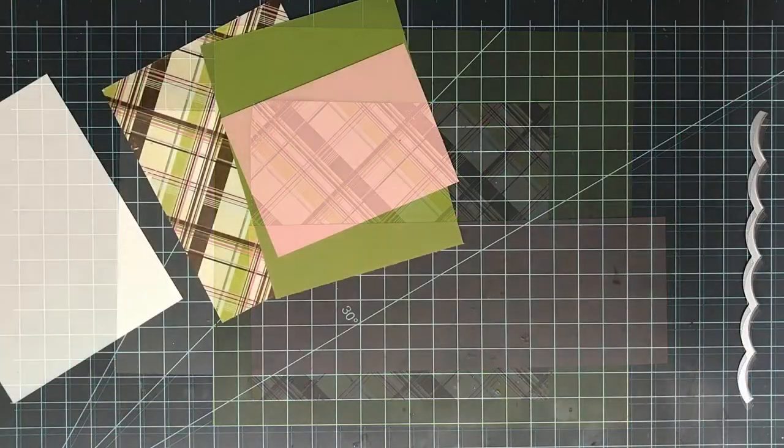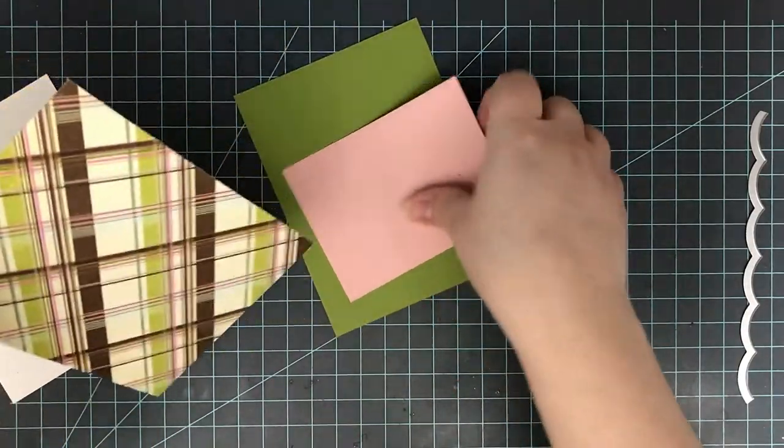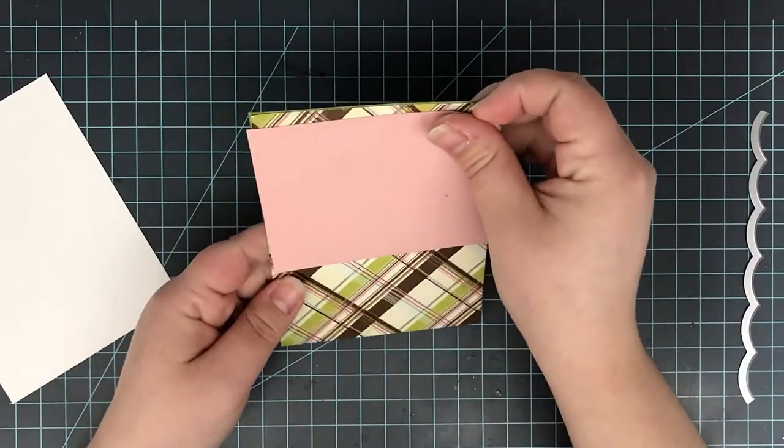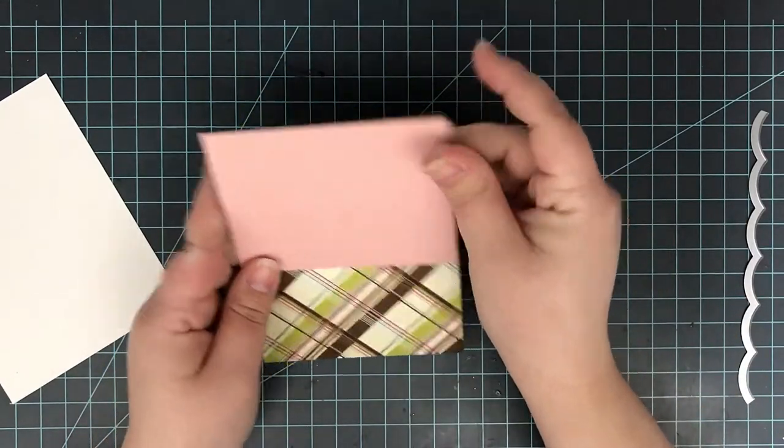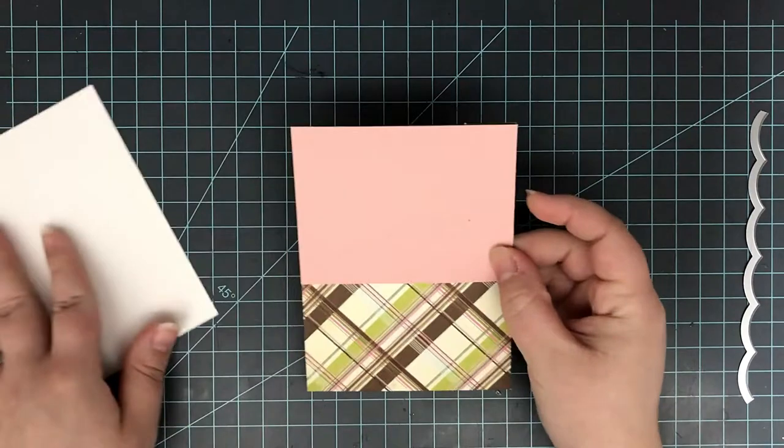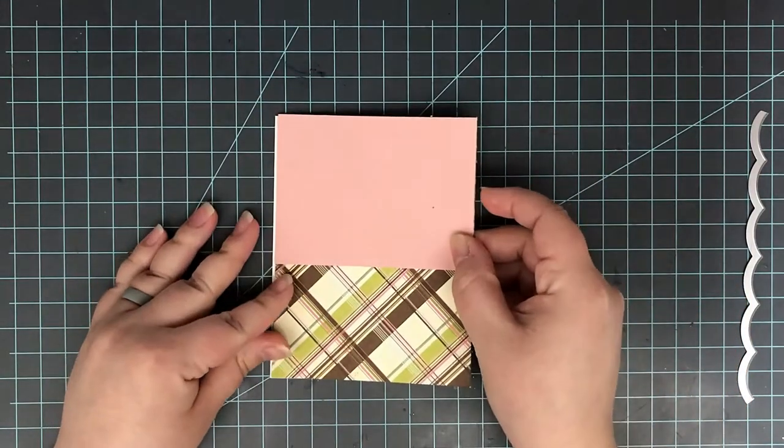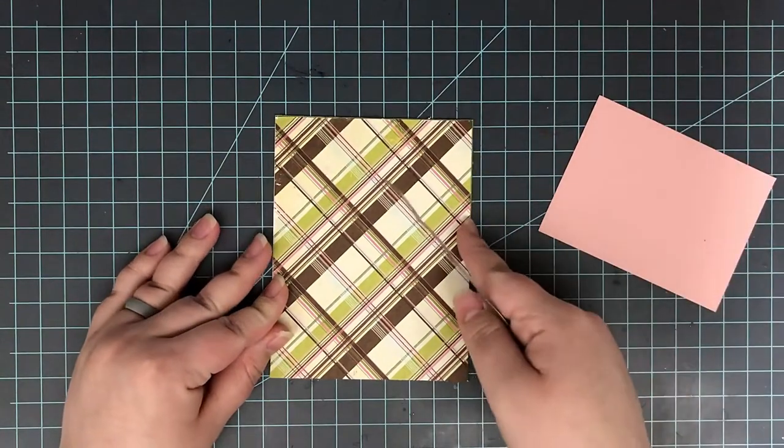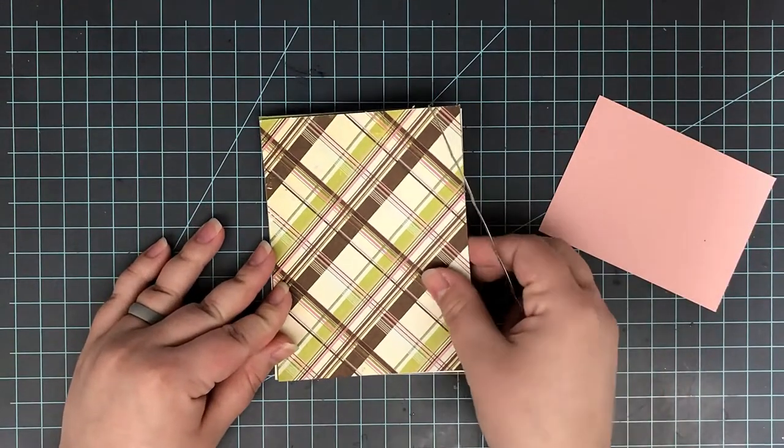With that scalloped edge, I'm going to be die cutting my three panels. Now I want these all to be exactly the same, so I'm going to line them up and cut them all at once. This die is from Stampin' Up, the large scallop die. I'm not sure if they still have it, but I will link something very similar. A lot of companies have these.